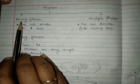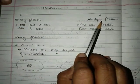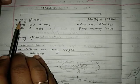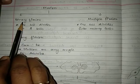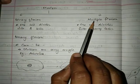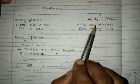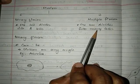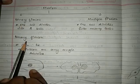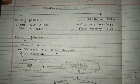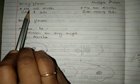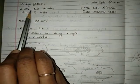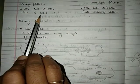Fission is of two types: binary fission and multiple fission. Binary means two, so one cell divides into two cells — that is binary fission. Multiple fission means one cell divides into many cells. In binary fission, a single cell divides into two equal-sized cells.